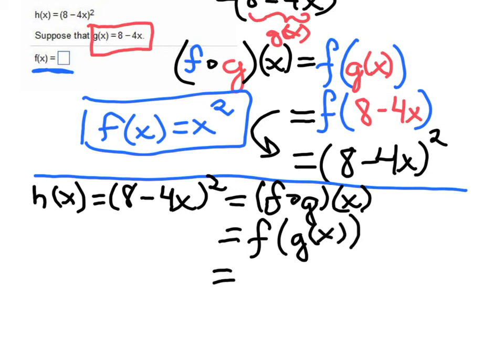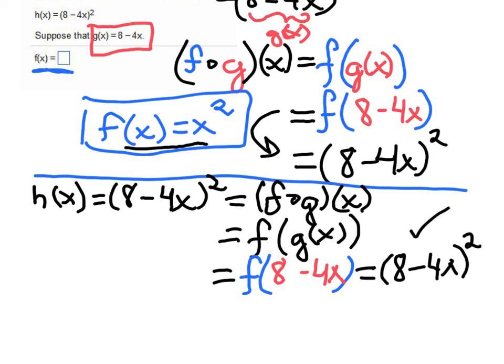Now applying the functions that we have, g = 8 - 4x. To apply the function f to that, I look at the equation for f up here, and it's x². So I take what's in the parentheses and square it. And so this seems to work.